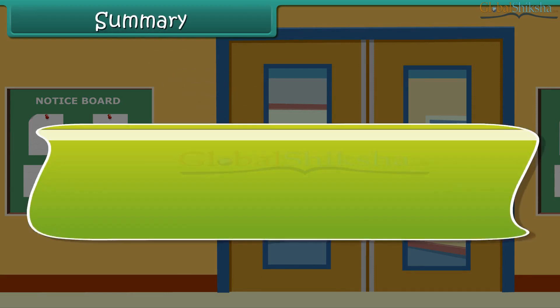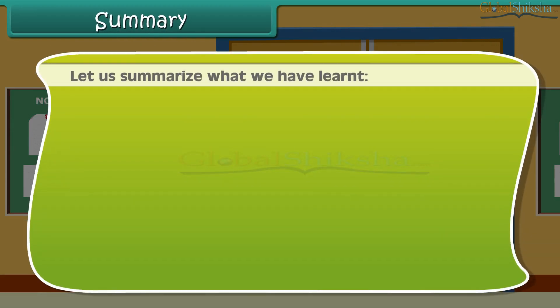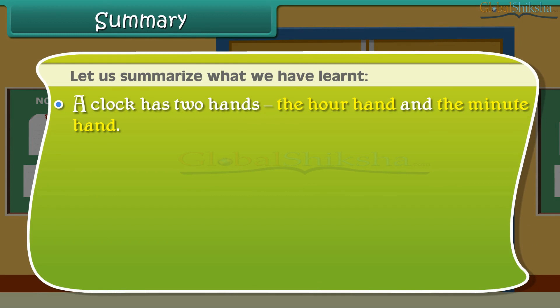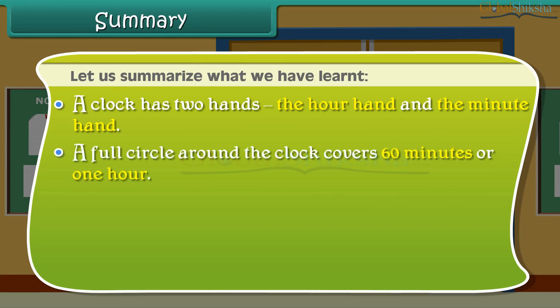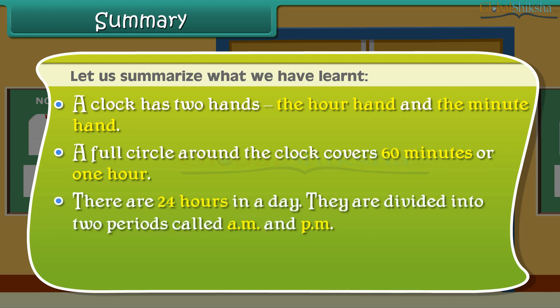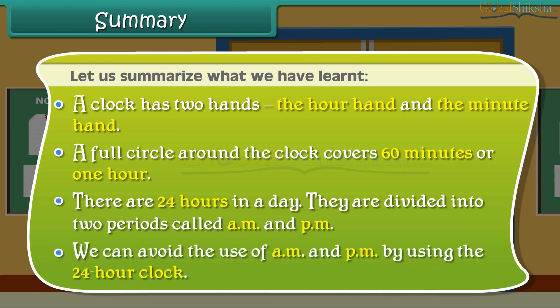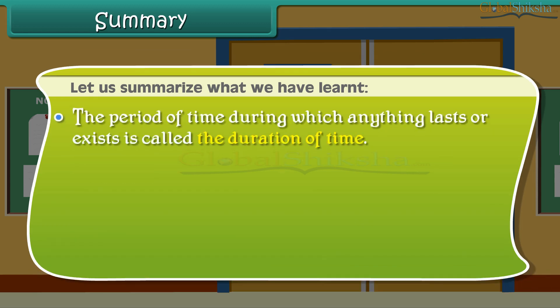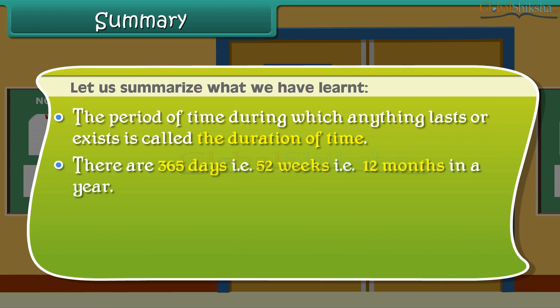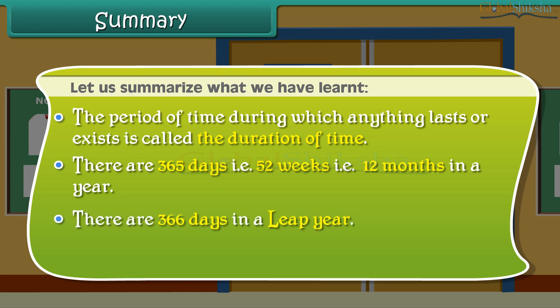Summary. Let us summarize what we have learned. A clock has two hands: the hour hand and the minute hand. A full circle around the clock covers 60 minutes or 1 hour. There are 24 hours in a day, divided into two periods called AM and PM. We can avoid the use of AM and PM by using the 24-hour clock. The period of time during which anything lasts or exists is called the duration of time. There are 365 days, that is 52 weeks, that is 12 months in a year. There are 366 days in a leap year.